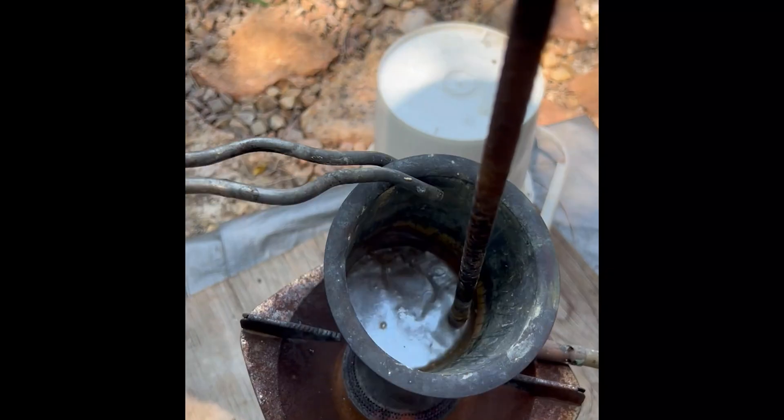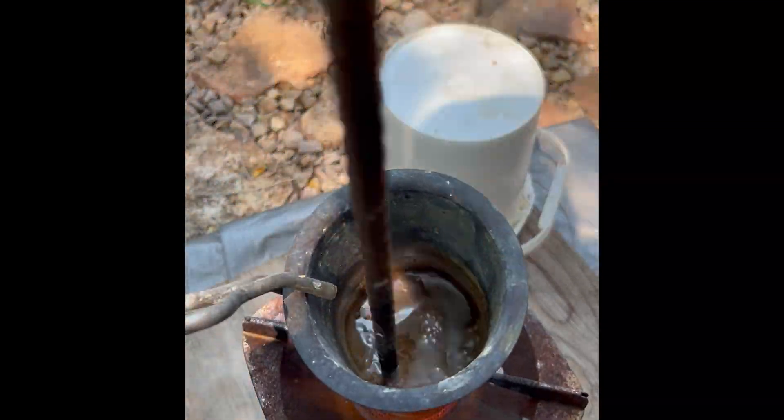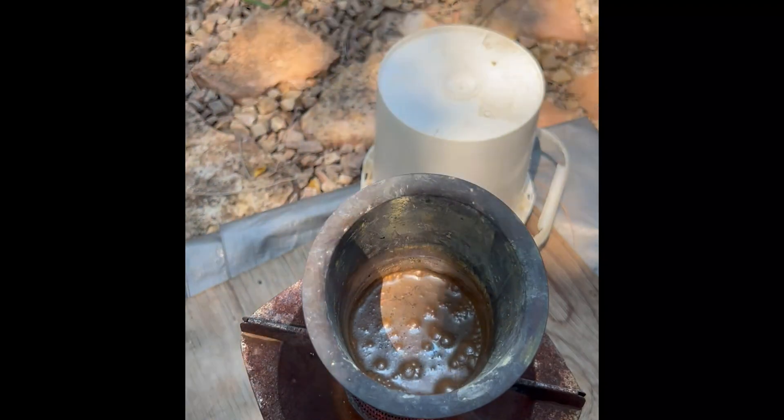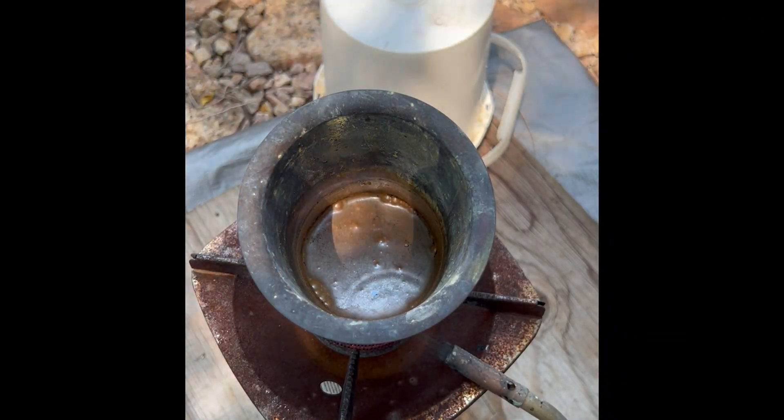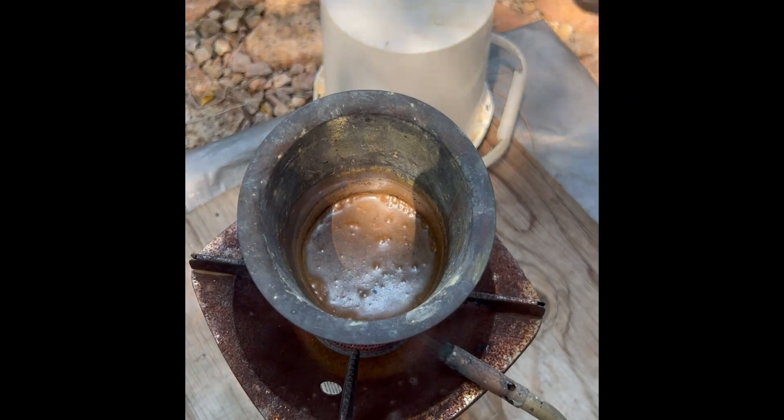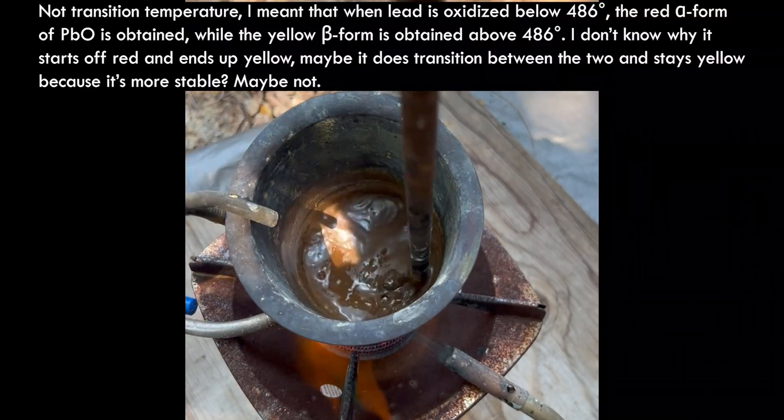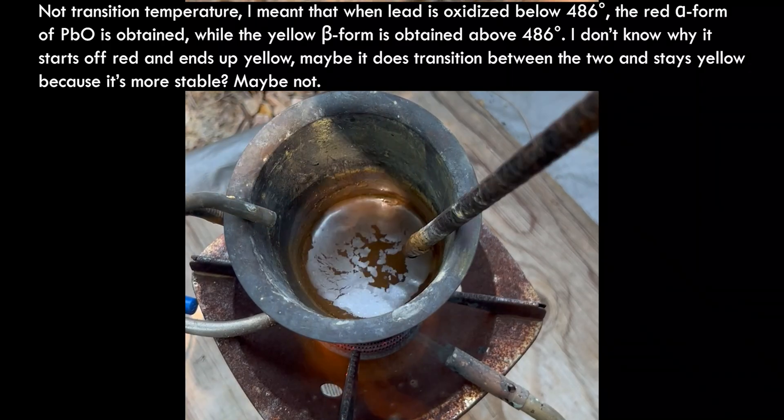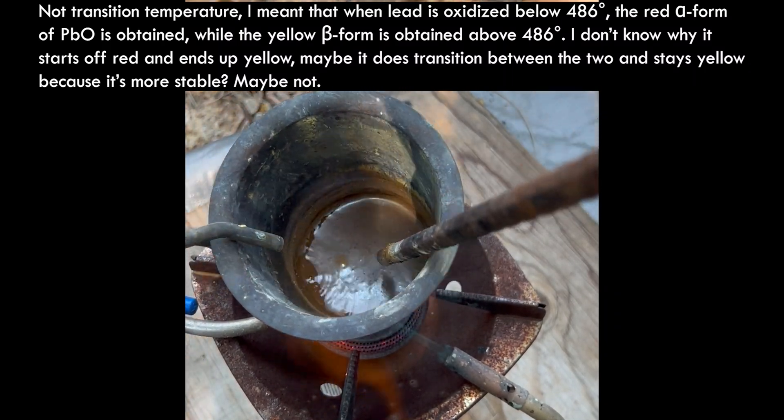So lead II oxide, which is what's formed in this reaction, has two polymorphs. A yellow one known as litharge and a red one known as massicot. The red form is produced at lower temperatures. The yellow form is produced at higher temperatures. I think it's 489 degrees, the transition temperature. But it starts off red and as the reaction proceeds and it gets hotter, it turns yellow. You'll see this shortly.